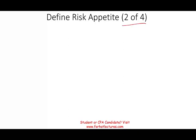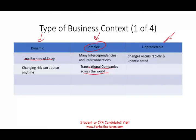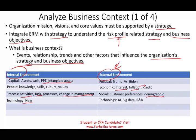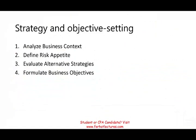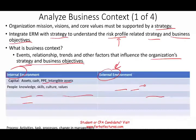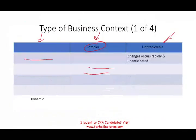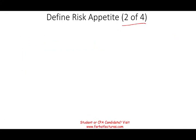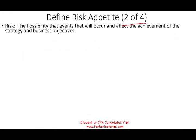The next principle is defining risk appetite — this is principle two of four in our strategy and objective setting component. We are dealing with the second level of enterprise risk management. First, what is risk? Risk is the possibility that an event will occur and negatively affect the achievement of your strategies and business objectives — something will happen and derail what you are planning.